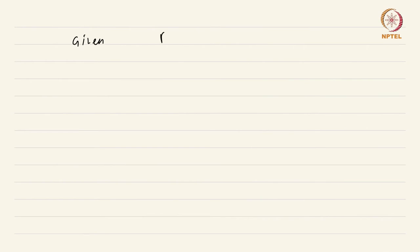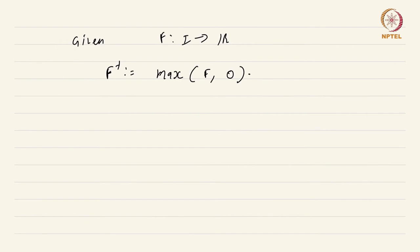Given a function f from I to ℝ — it need not be Lebesgue integrable or anything — you define f⁺ to be the positive part. What it does is: if f at a given point is greater than 0, then f⁺ equals f there. If it is less than 0, you remove that part and make it 0. So this is just max(f, 0). This function f⁺ agrees with f whenever f is greater than or equal to 0, and is 0 wherever f is negative — all those places where f is negative are pushed up to 0 — giving a non-negative function.